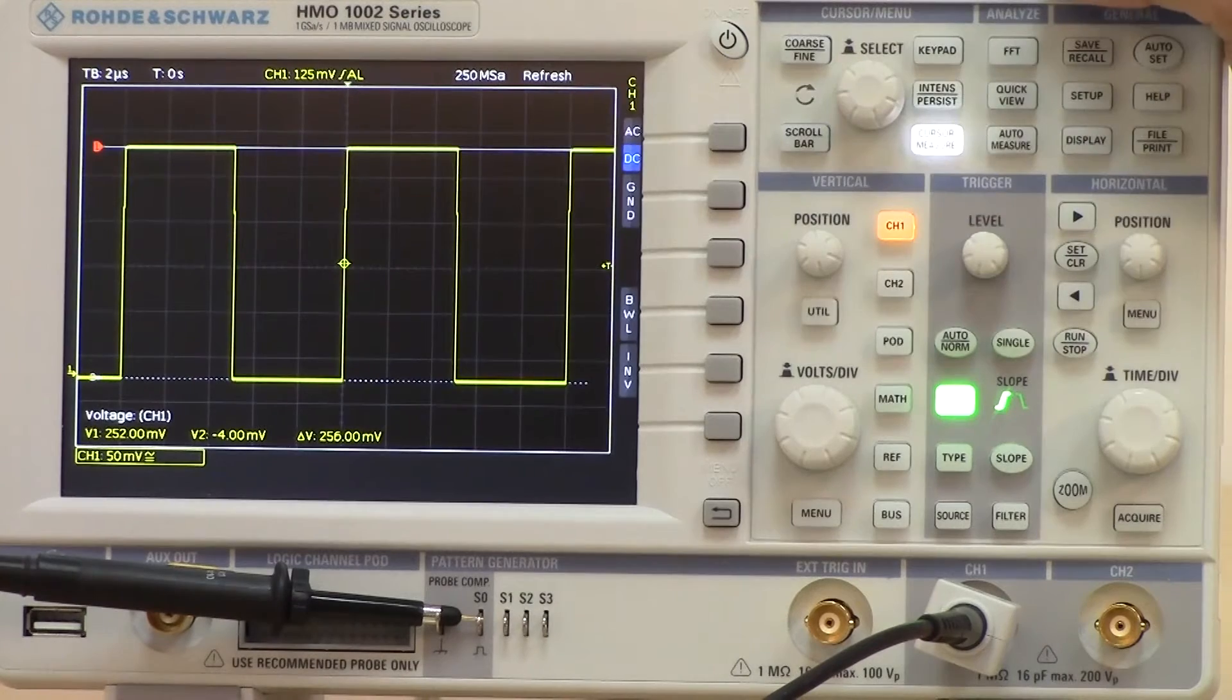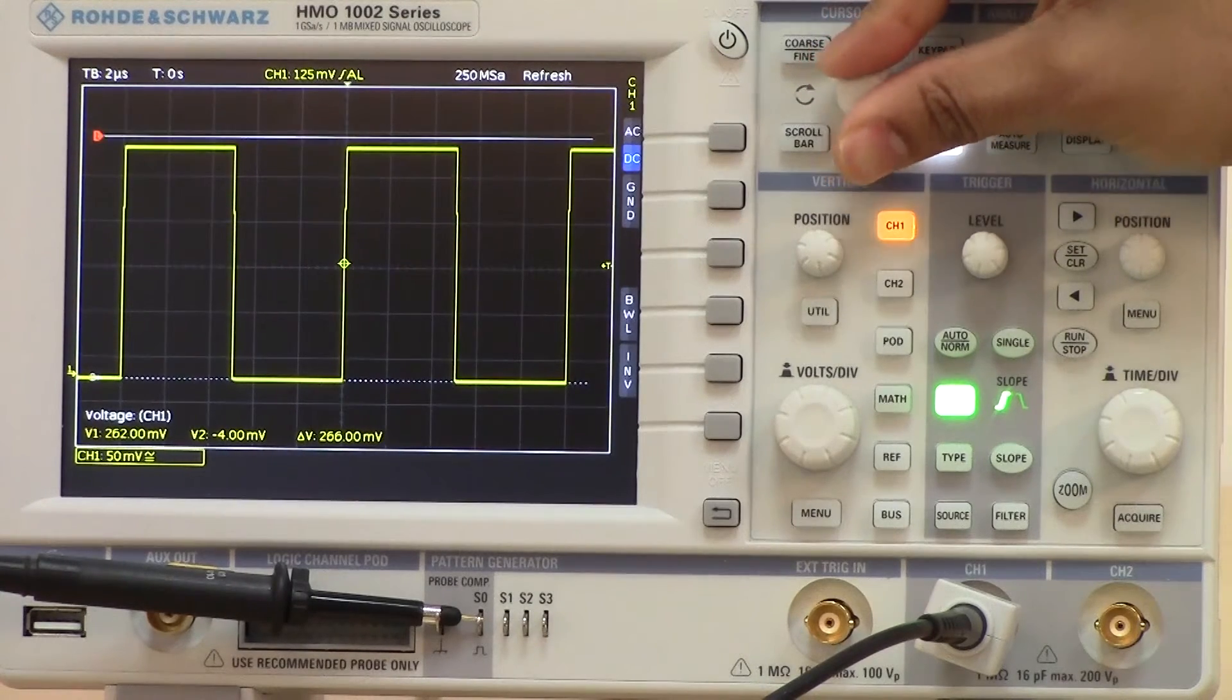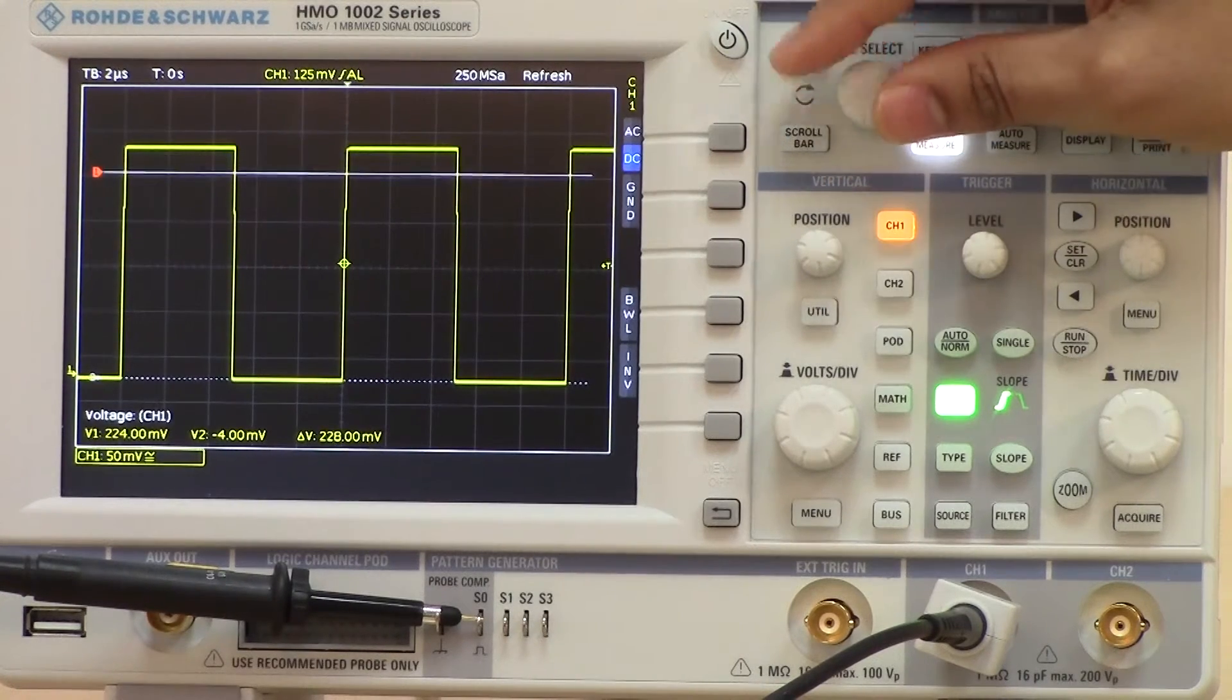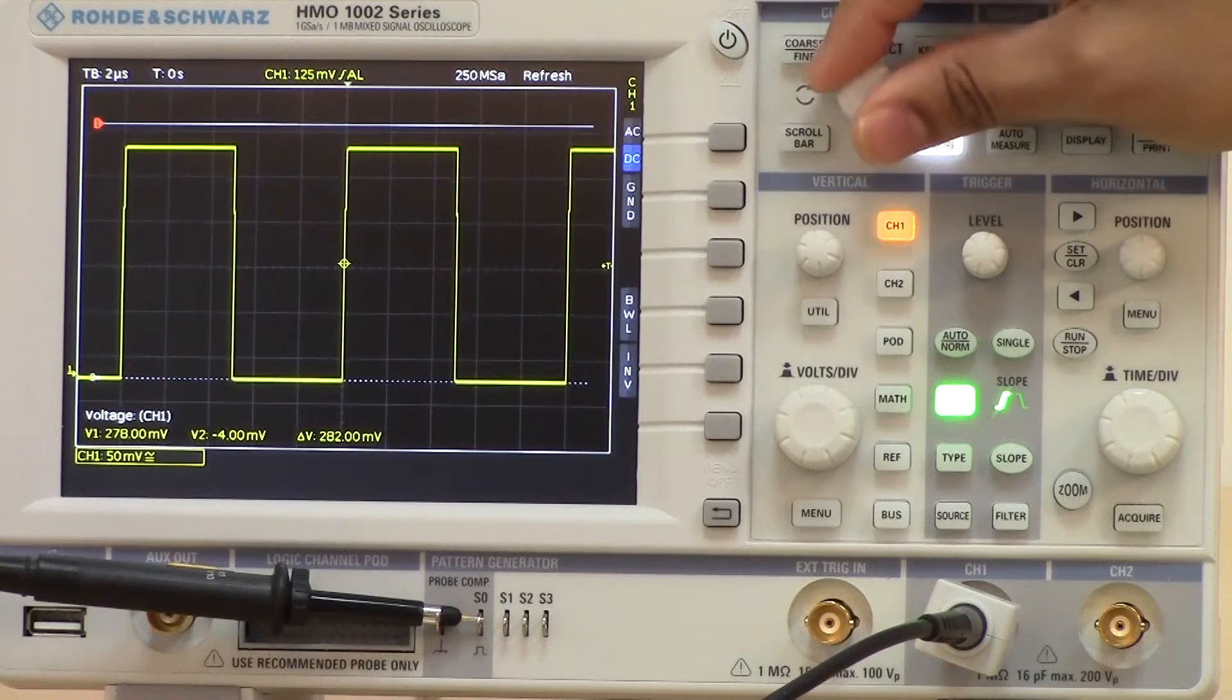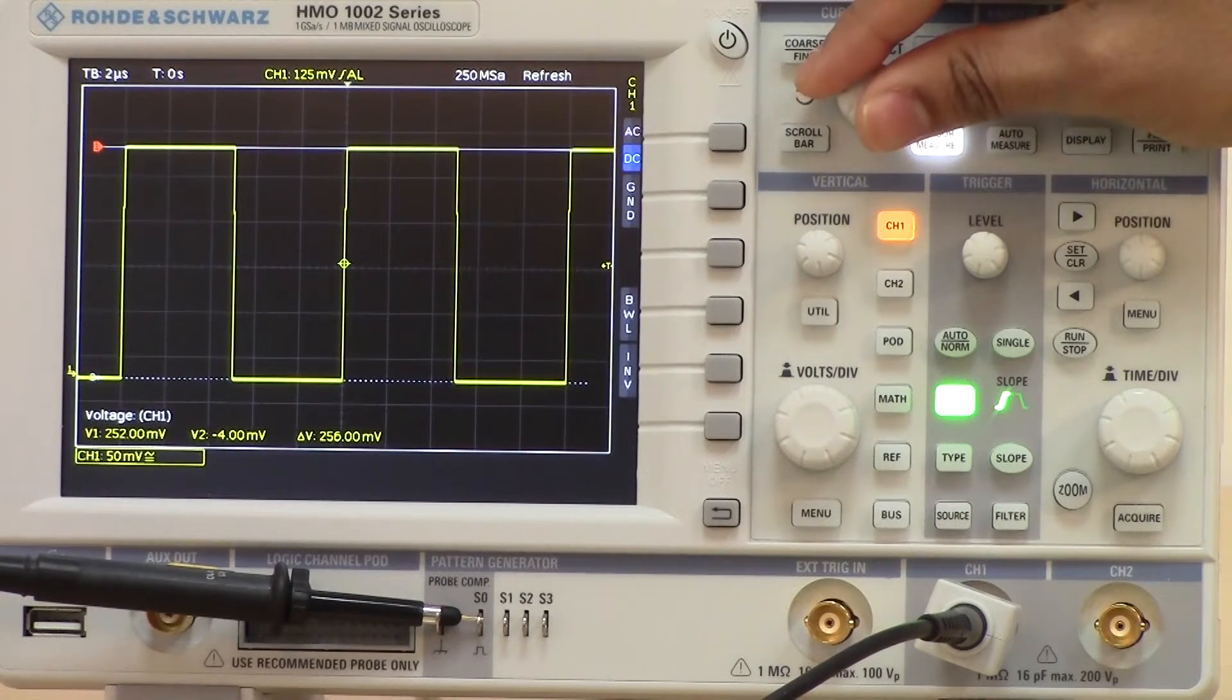If we press the select key again, we jump into the first cursor here, and then users can choose to position this exactly onto the trace.